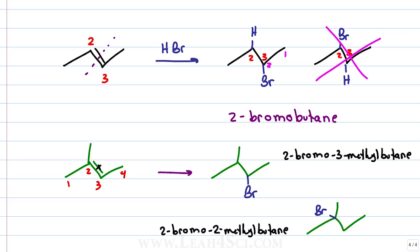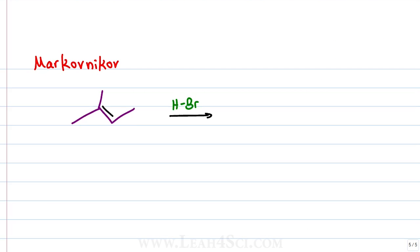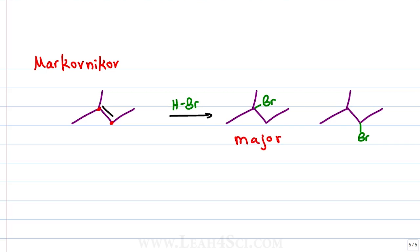These are very different molecules, so the question is: which is the correct product? This is where Markovnikov's rule comes in. Markovnikov discovered that when you have hydrohalogenation of an asymmetrical starting alkene where the pi bond sits between a tertiary and secondary carbon, one product will be favored — the one that has the halogen on the more substituted carbon, making 2-bromo-2-methylbutane the major product.